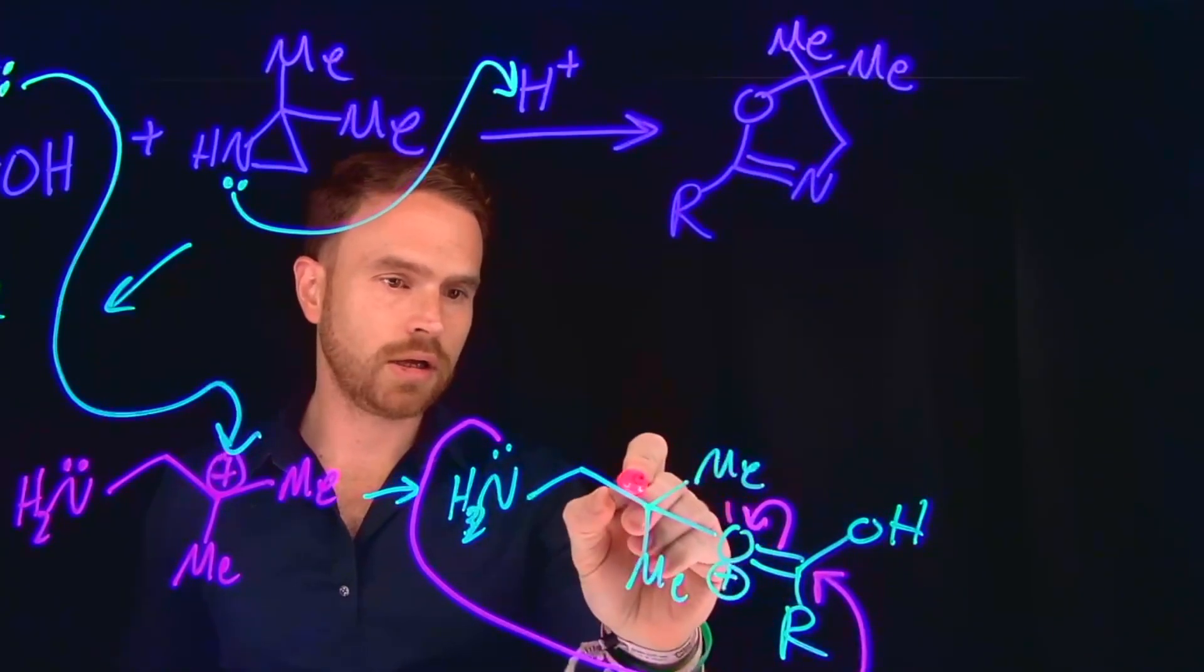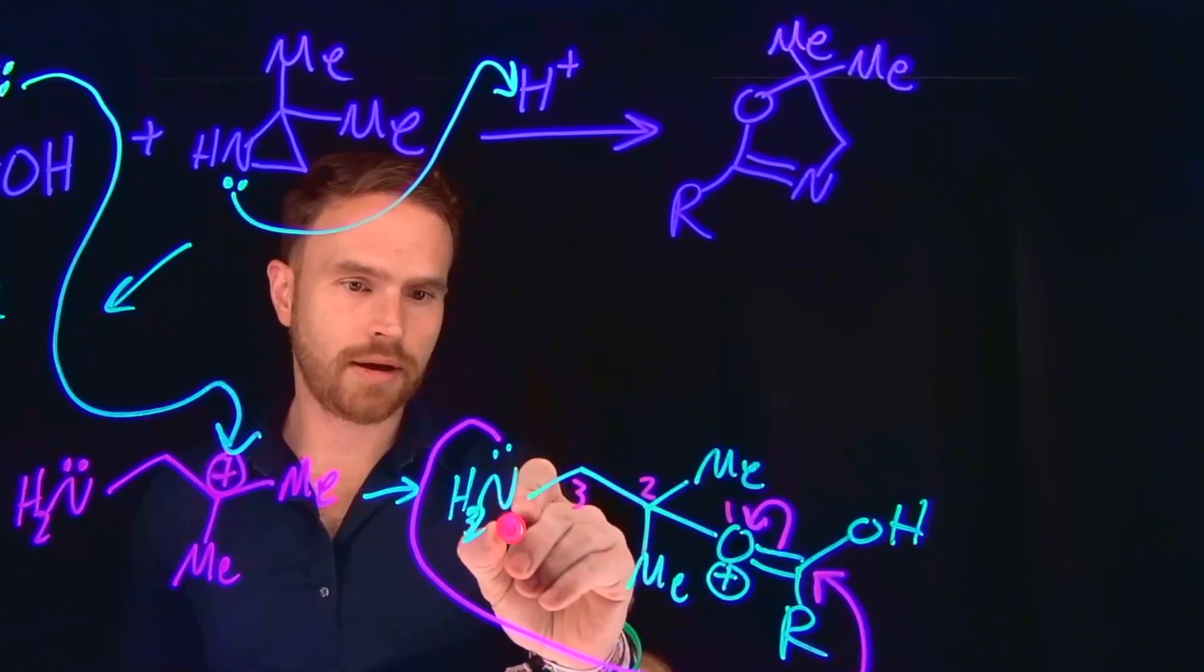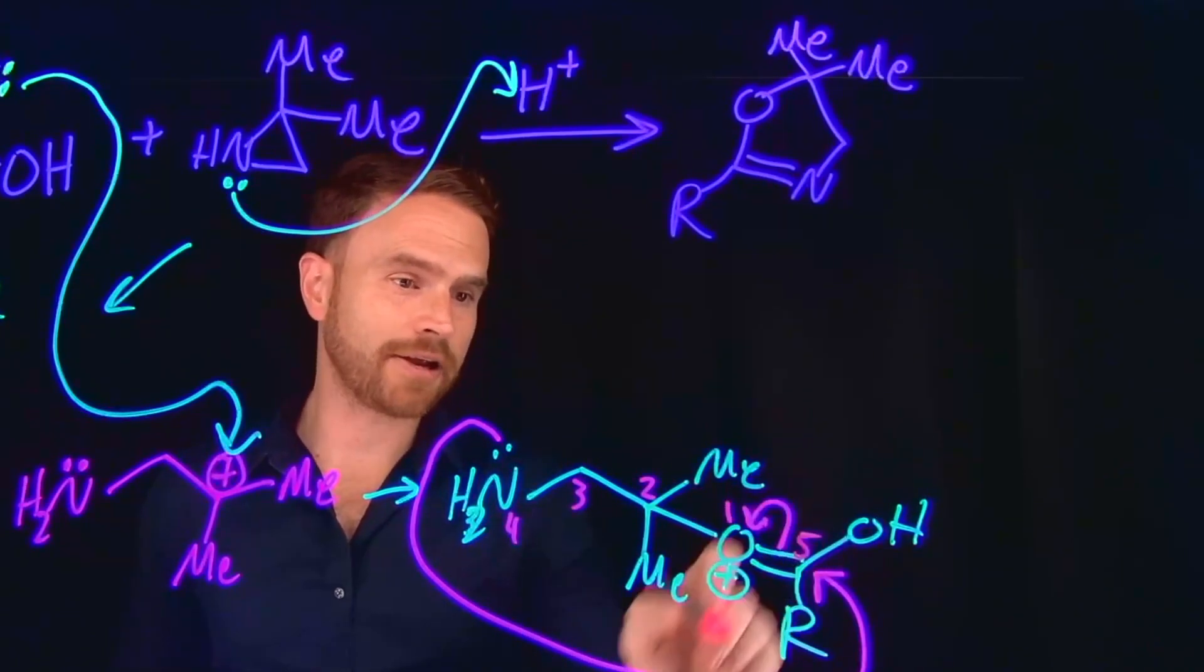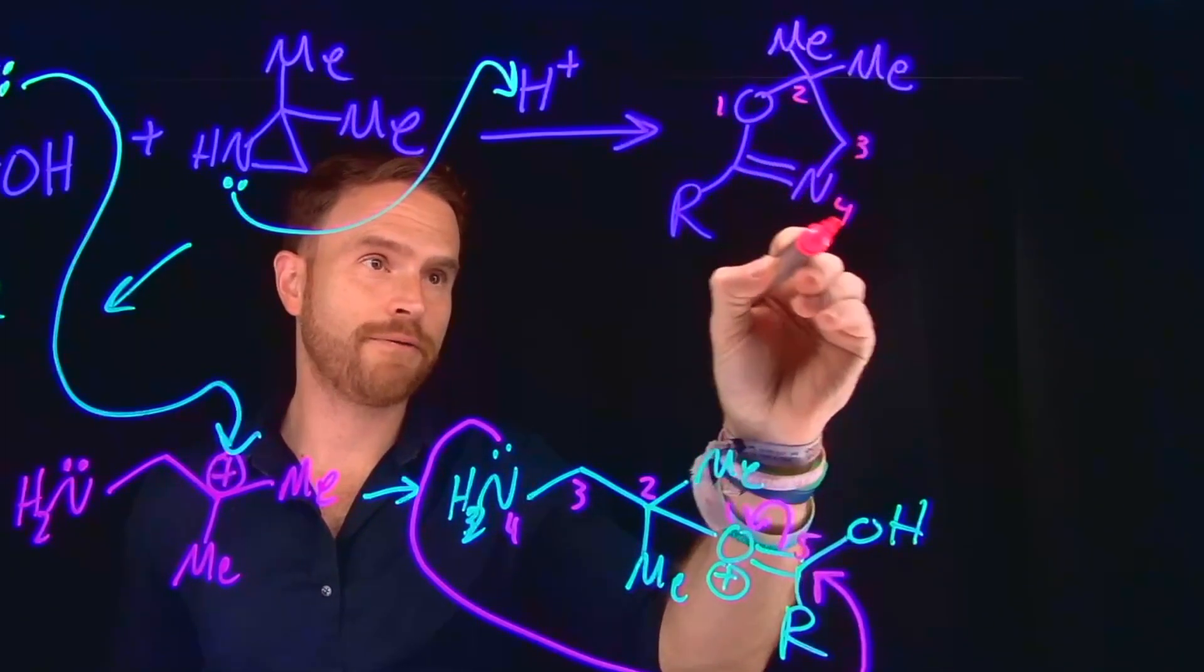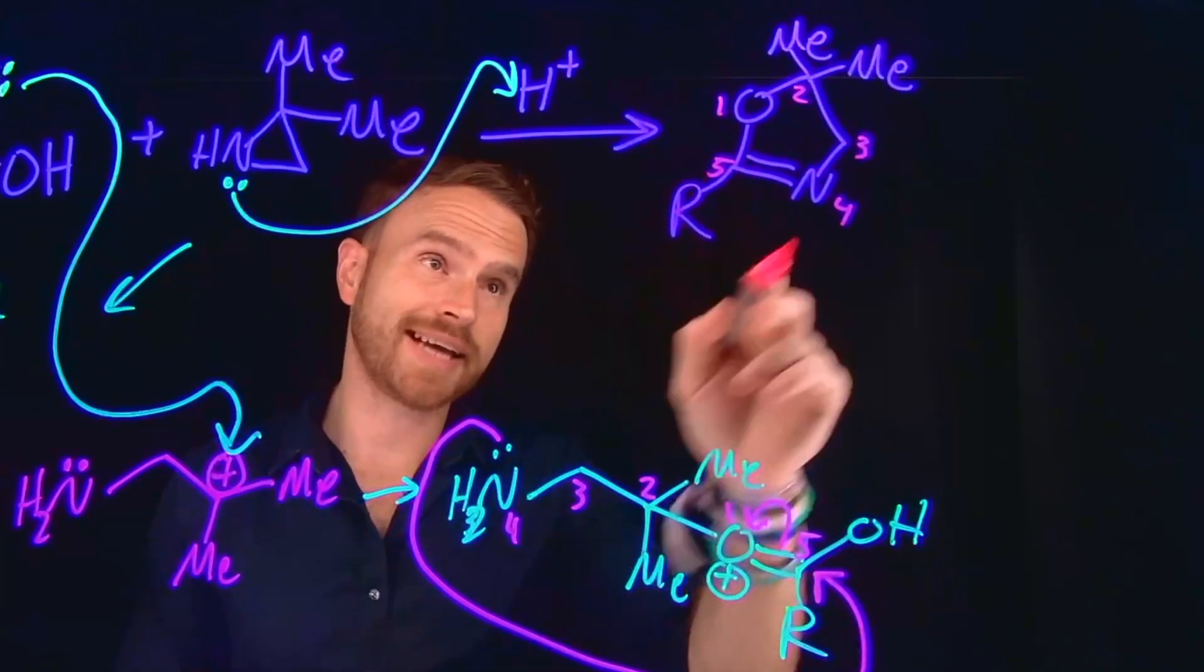Because notice, if we start counting at the oxygen, this is one, two, three, four, five atoms as part of this ring, where this was one, two, three, four, five in our oxazoline.